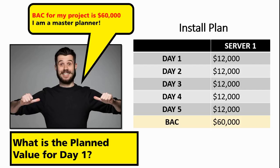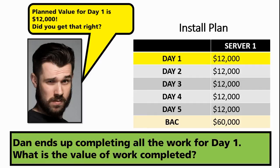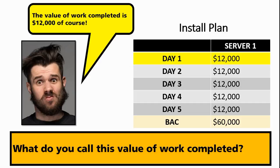The planned value for day one is $12,000. It means that the budgeted cost of the work scheduled for day one is $12,000 — he budgeted $12,000 for day one. And as you take a look at his install plan, you can also see that for day two, three, four, and five, the planned value is $12,000 as well. So planned value is the budgeted cost of work scheduled across a particular time period. In this example, it is a one-day time period: $12,000. Dan ends up completing all the work for day one. If he got all the work that he had planned for accomplished, what is the value of work completed? The value of work completed is the price tag you put on it: $12,000.